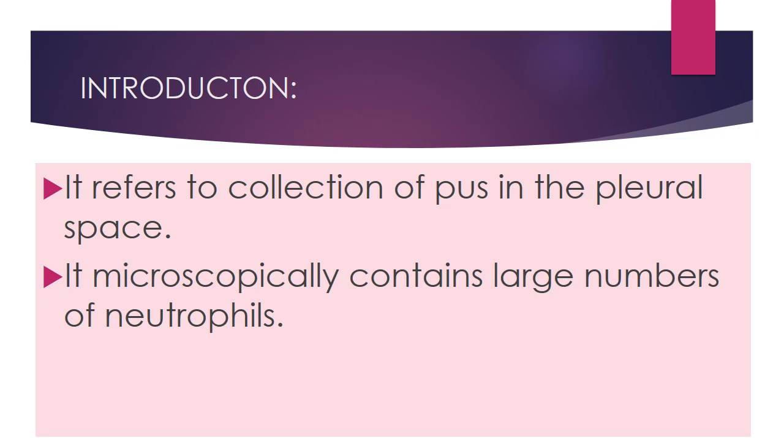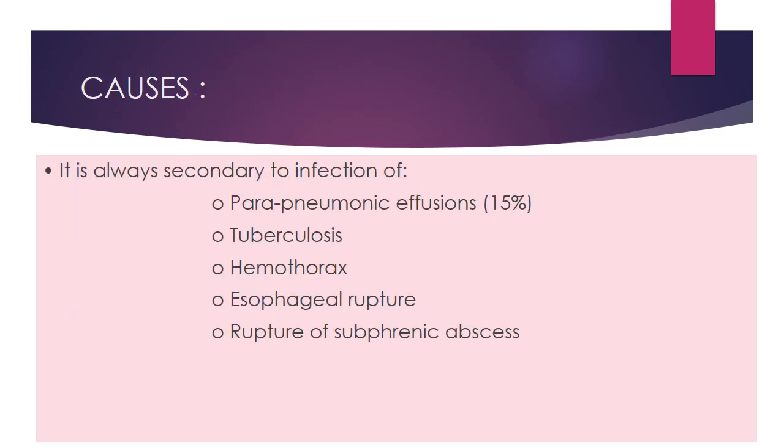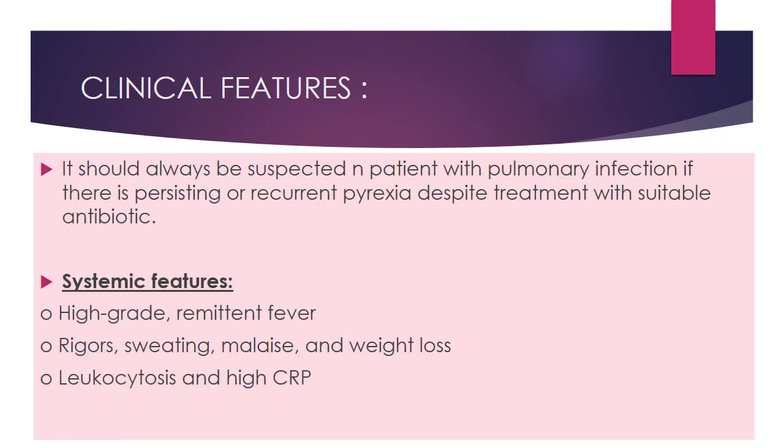Microscopically, it contains a large number of neutrophils. It is always secondary to infection — for example, parapneumonic effusion, tuberculosis, hemothorax, esophageal rupture, or rupture of a subphrenic abscess. It should always be suspected in patients with pulmonary infection if there is persistent or recurrent fever despite treatment with suitable antibiotics.